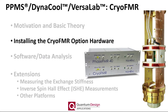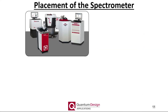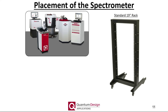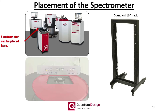On to installing the cryo-FMR option hardware. Our family of PPMS systems represent a wide variety of form factors. Furthermore, the instrument box from Nanosk is not one of our usual CAN-based modules that you may be familiar with, which can make placement of the spectrometer sometimes challenging, especially since the included RF cables are only 36 inches long. That being said, the spectrometer can easily be mounted within a standard 19-inch rack, as shown here. Additionally, for the VersaLab, it can be simply placed at this location, or for the Dynacool, which will be shown in the following slides, the instrument can simply be placed at the top behind the sample chamber, as shown here.